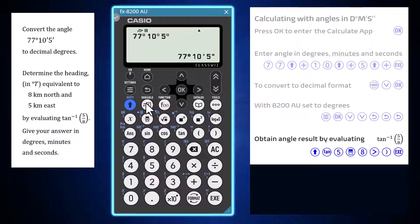If your 8200 is set to degrees, then the angle output of calculations like the arc tangent of 5 over 8 is given in decimal degrees.